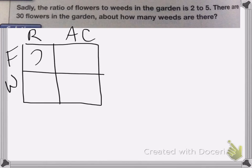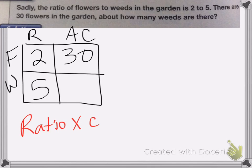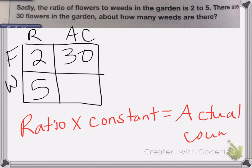So the ratio of flowers to weeds is 2 to 5. And now I know I have 30 flowers in my garden and I need to figure out how many weeds I have. So I need to figure out what the constant factor is. So the constant factor is what my ratio times the constant factor equals my actual count.